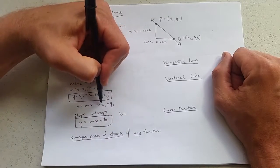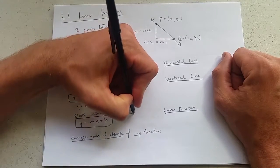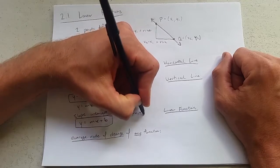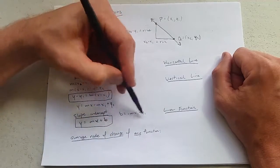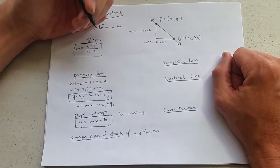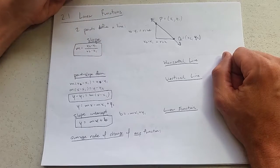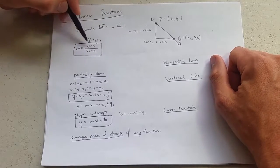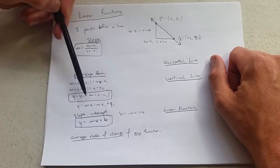I let b equal negative mx1 plus y1. This is our y-intercept right here. So this is how to get slope from a line. And then you can go into either form.